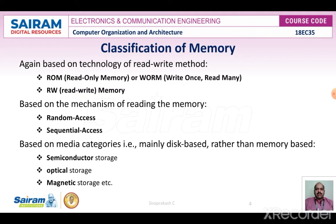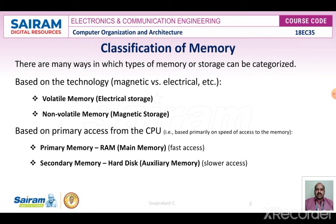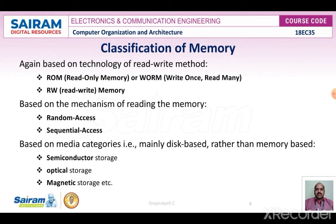Based on media categories — that is, disk-based versus memory-based — memories are classified as secondary storages, optical storage, and magnetic storages. So the classifications of memory are: based on technology, based on primary access from the CPU, based on the technology of the read/write method, based on the mechanism of reading the memory, and based on media categories.